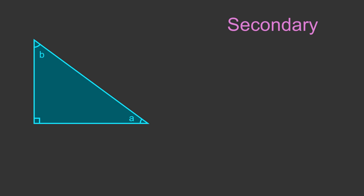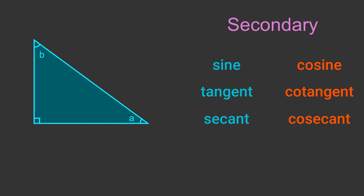The names of the secondary trig functions are formed by adding the prefix CO to the name of one of the primary functions. So the functions sine, tangent and secant give rise to the secondary functions cosine, cotangent and cosecant. This indicates that the function is based on the complementary angle. In a right-angle triangle, the two acute angles A and B are called complementary angles. Complementary angles A and B add up to 90 degrees. The primary functions are based on the angle at the centre of the circle, that we have been calling angle A. The secondary functions are based on the complementary angle B.